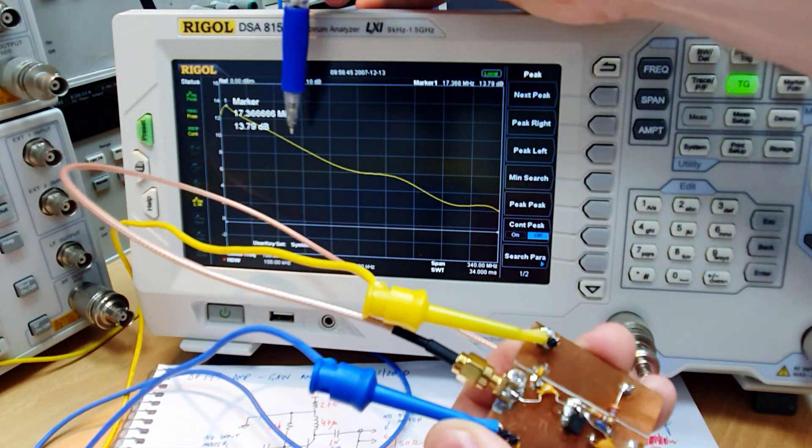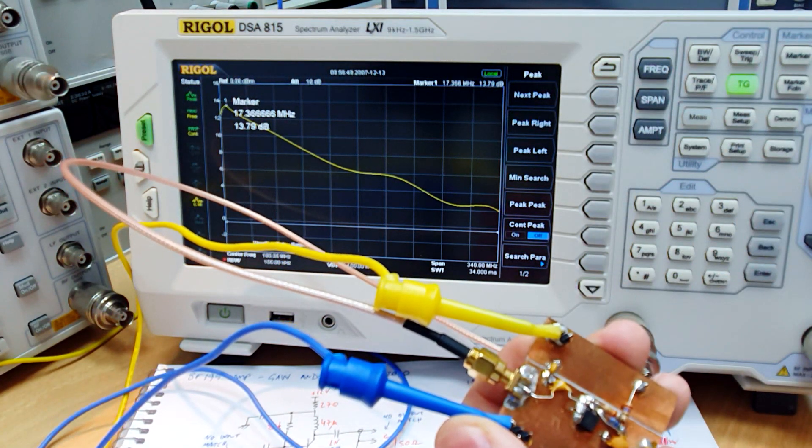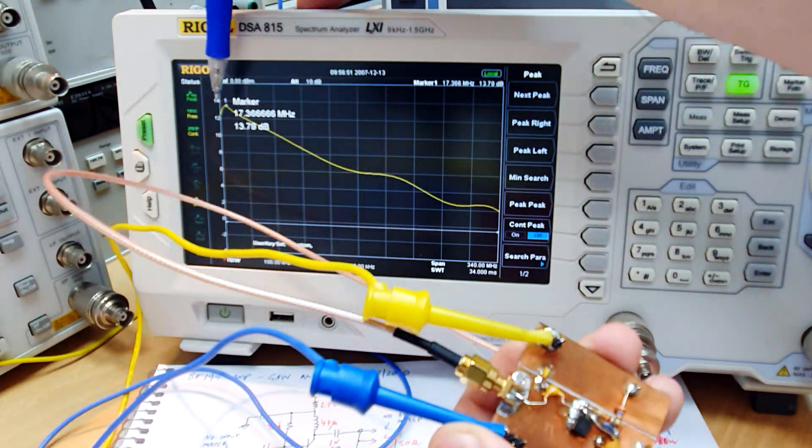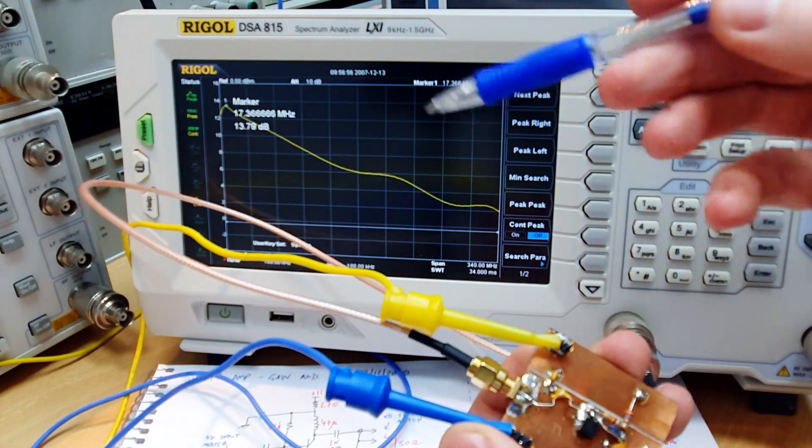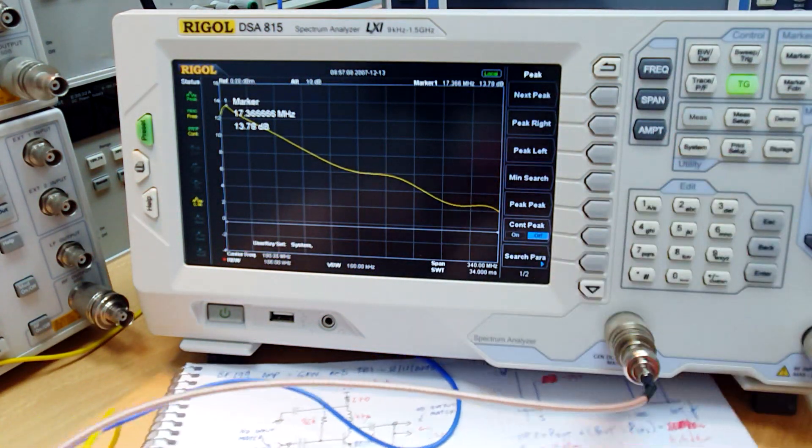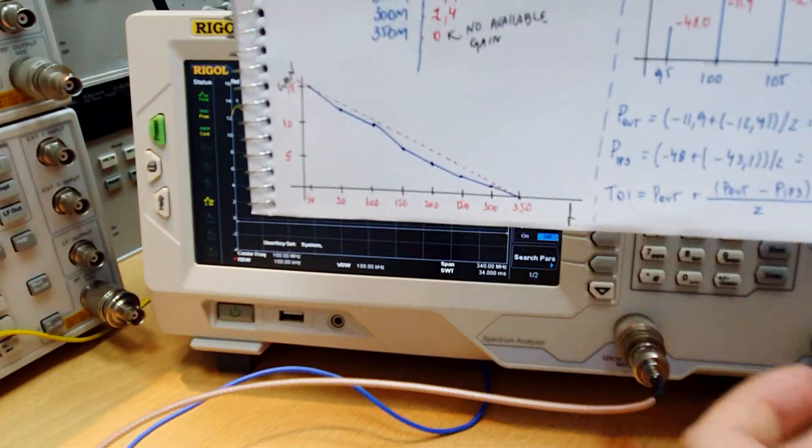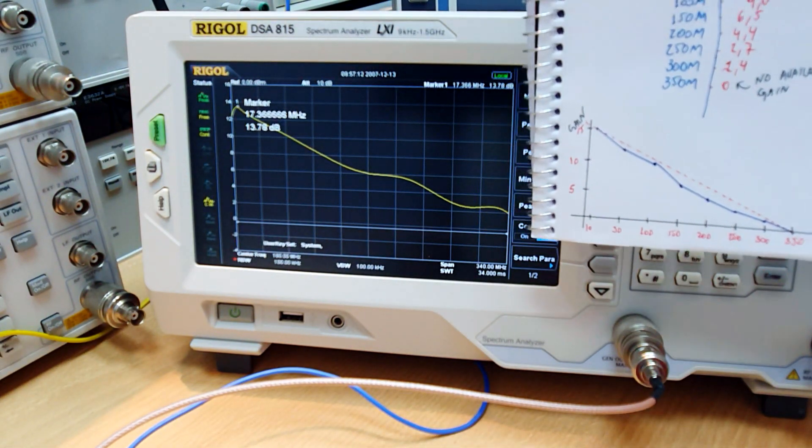We sweep the frequency of the tracking generator synchronized with the receiving frequency of the spectrum analyzer. And we can see here that we have exactly, let's get here the notebook, we can see that we have exactly the same curve here. Pretty nice.